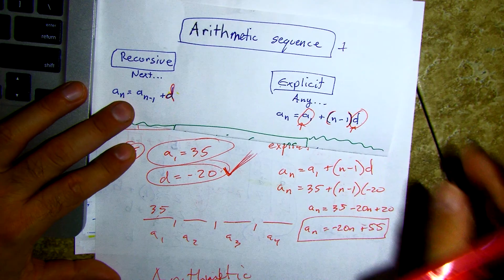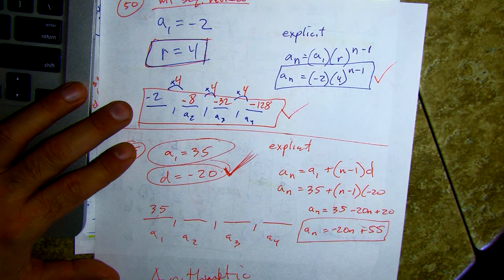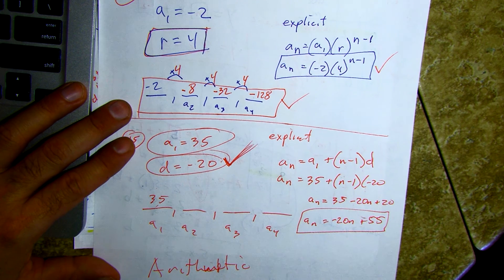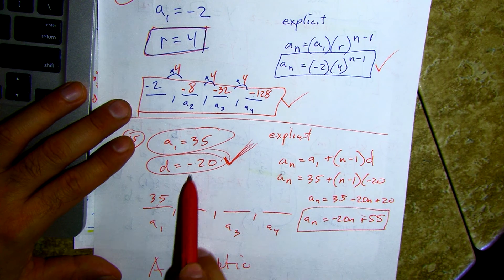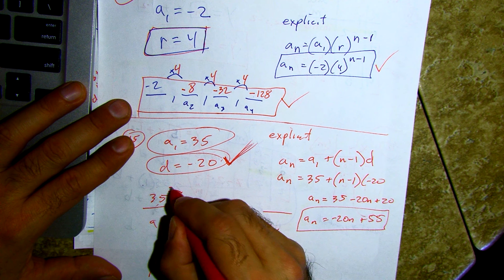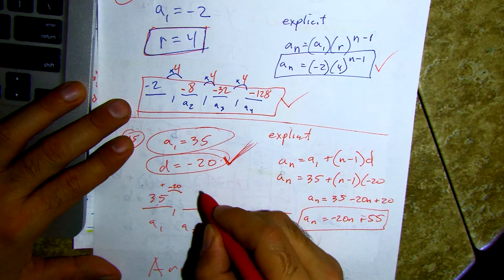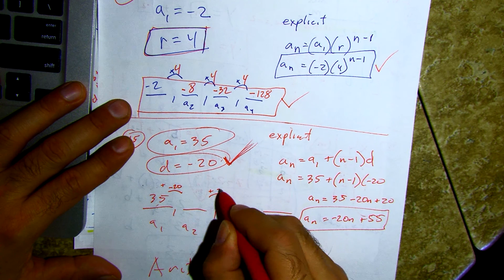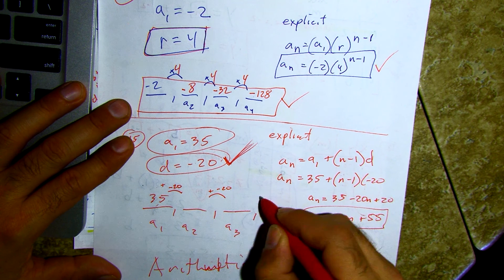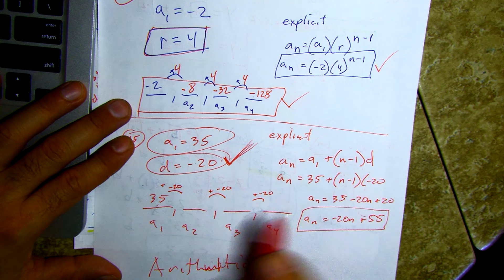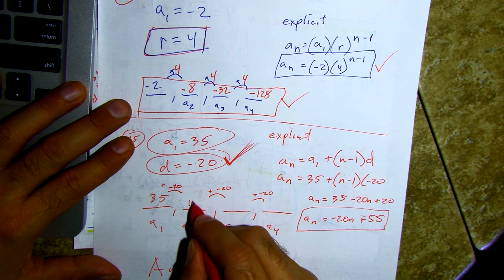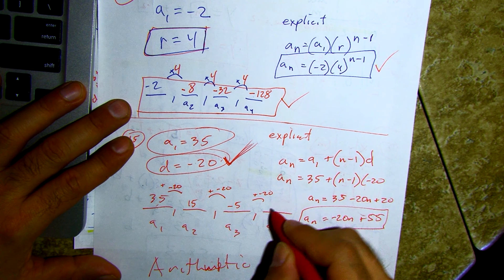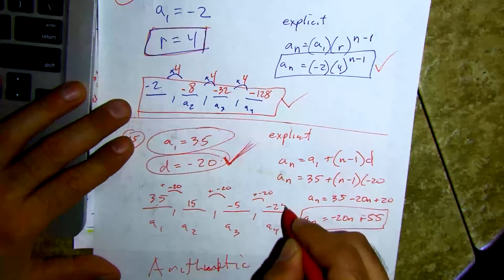So from thirty-five we get down to fifteen; then negative five; then negative twenty-five. We have our four terms and our explicit formula. Take a screenshot.